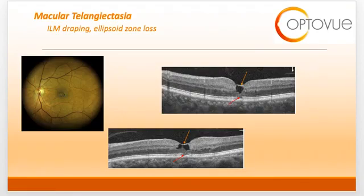Often, only the internal limiting membrane is left in place over these areas, lending to the term ILM drape. The orange arrows on this slide are directed at the areas of ILM draping. You can also see loss of the ellipsoid zone as indicated by the red arrows on this slide.